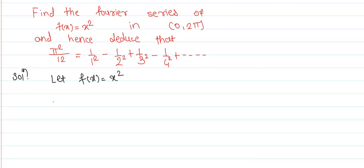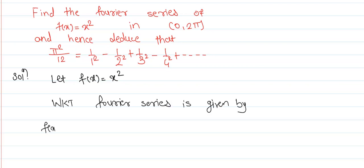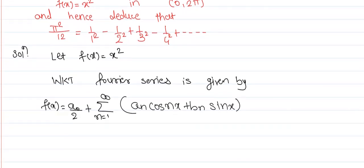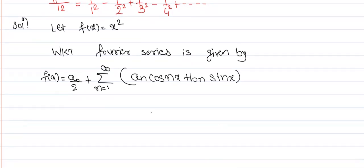We know that the Fourier series is given by f(x) = a₀/2 + summation from 1 to infinity of (aₙ cos nx + bₙ sin nx), where a₀, aₙ, and bₙ are Fourier coefficients. We have to find their values, where a₀ is given by (1/π) ∫₀²π f(x) dx.